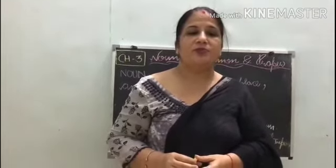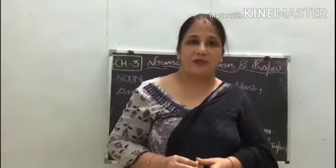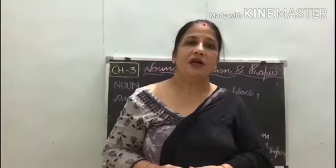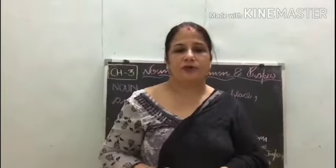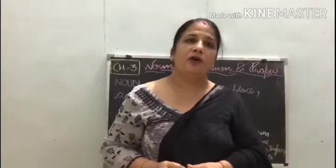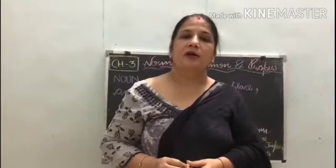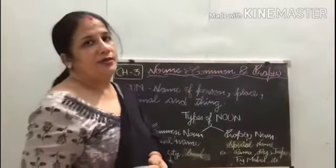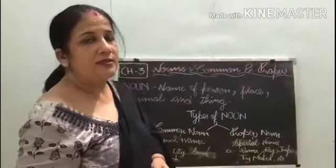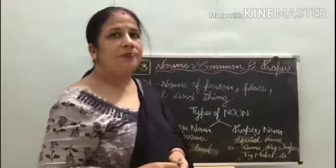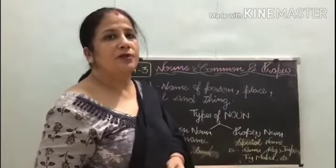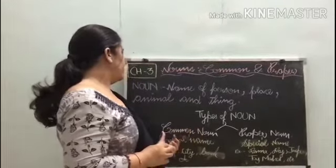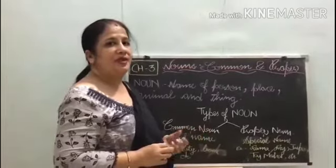Proper noun always begins with a capital letter. Proper noun kya hota hai? Hamesha capital letter se begin hota hai, start hota hai. Or common noun always begins with a small letter. Common noun ko kis mein likhenge hamesha? Small letter. Okay students, aapko achhe se clear ho gaya. Ek baar dhyaan se bata rahi hoon: common noun kya hota hai aur proper noun kya hota hai? Listen carefully. Common noun is a general name of person, place and thing.